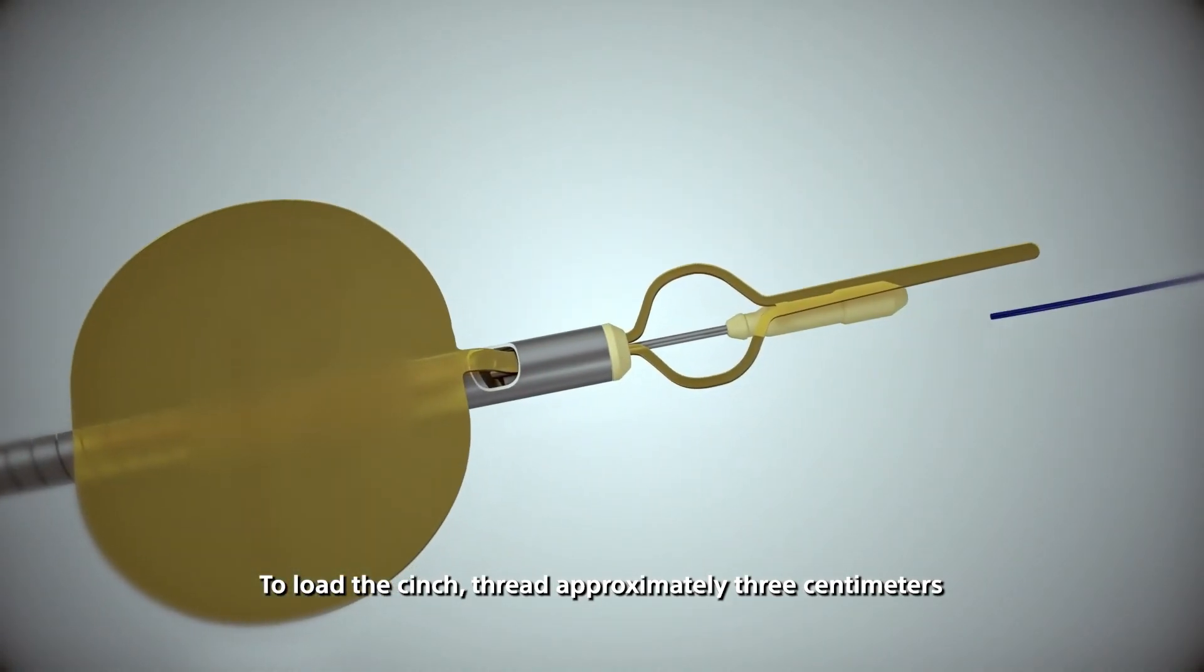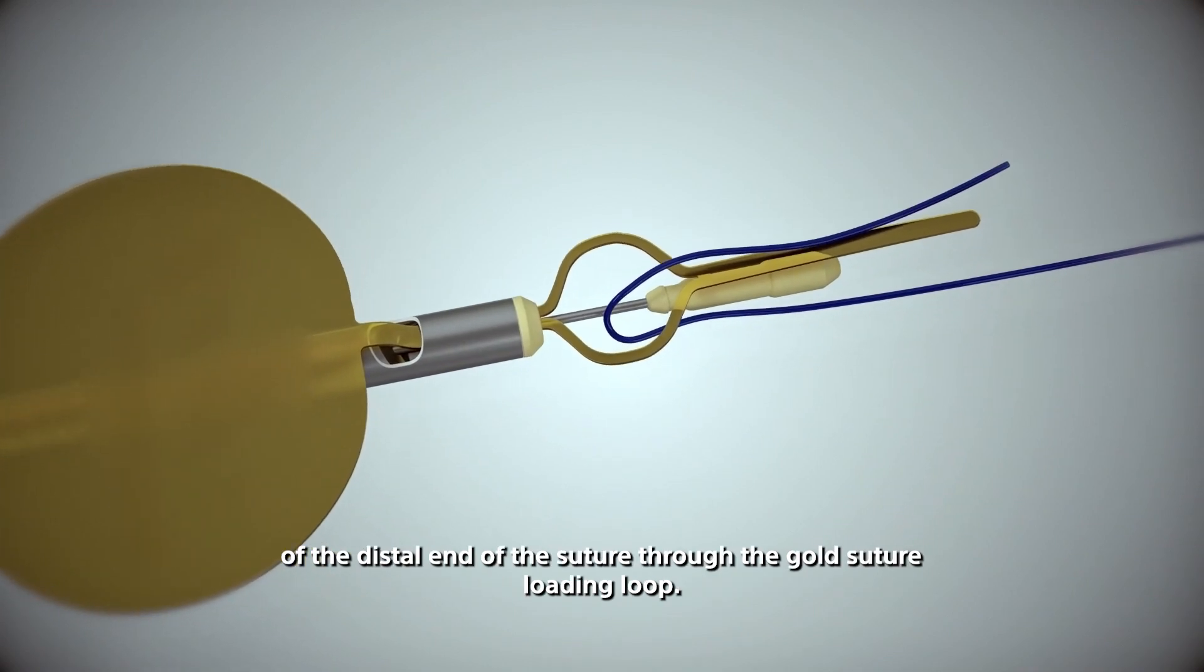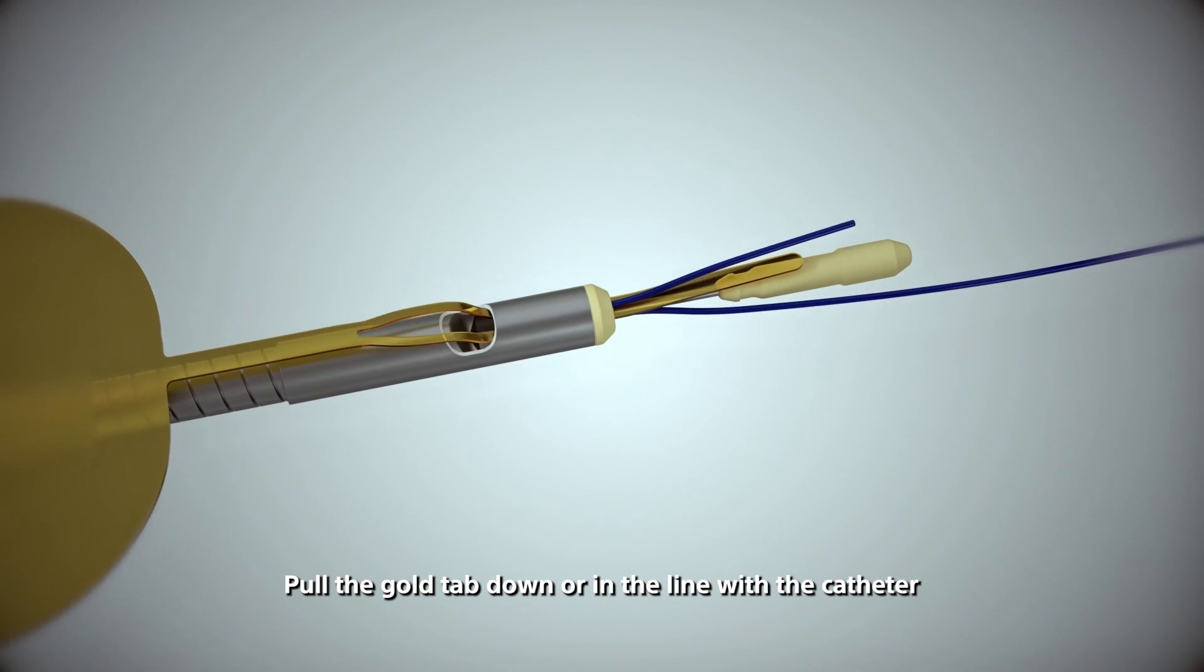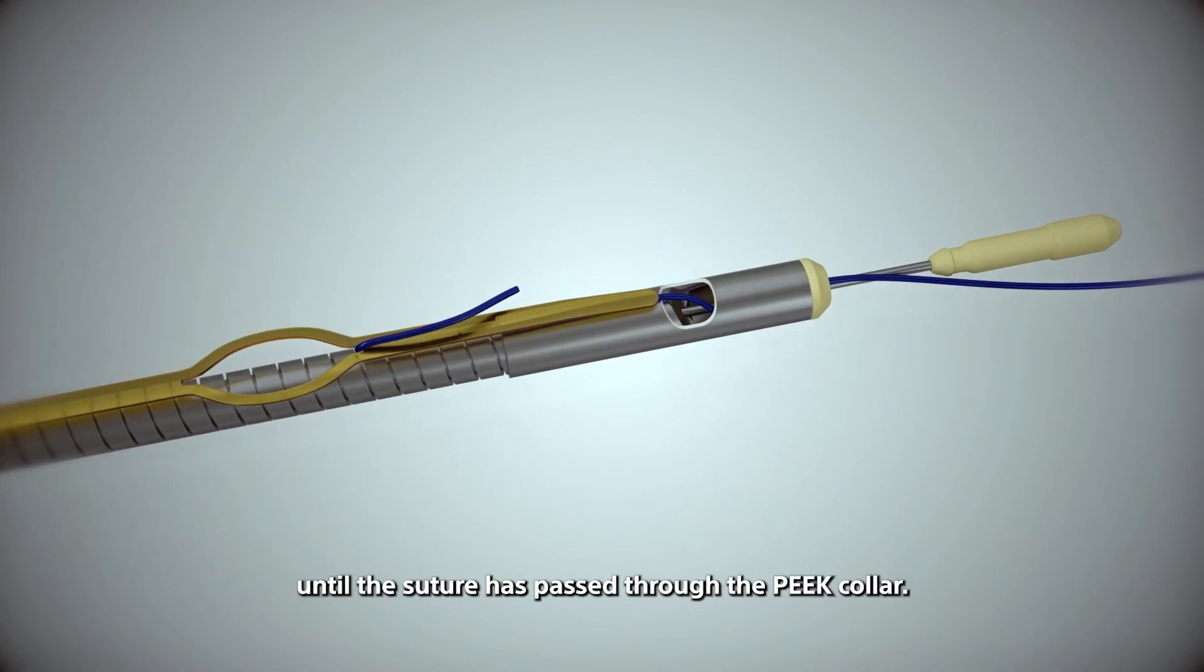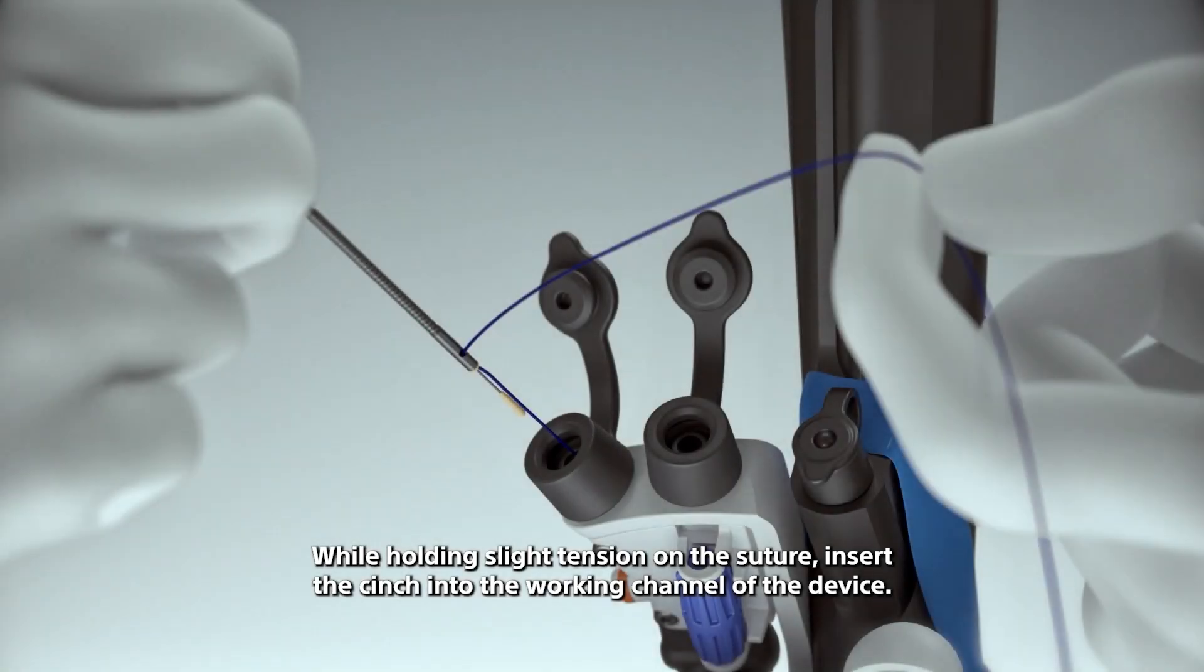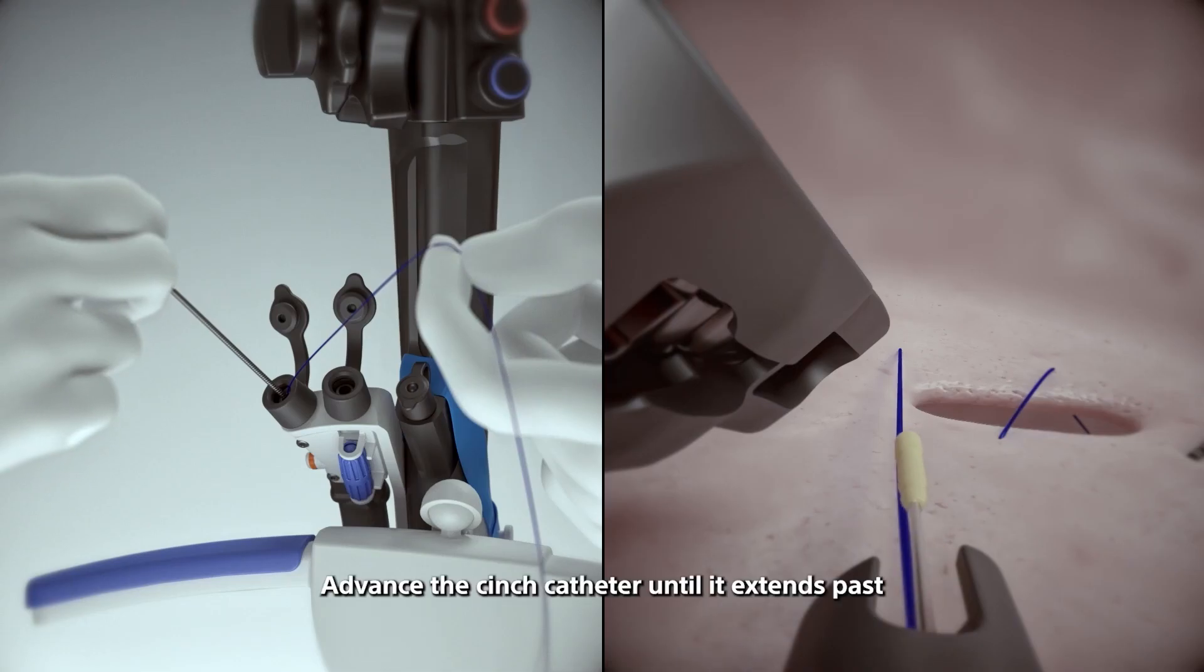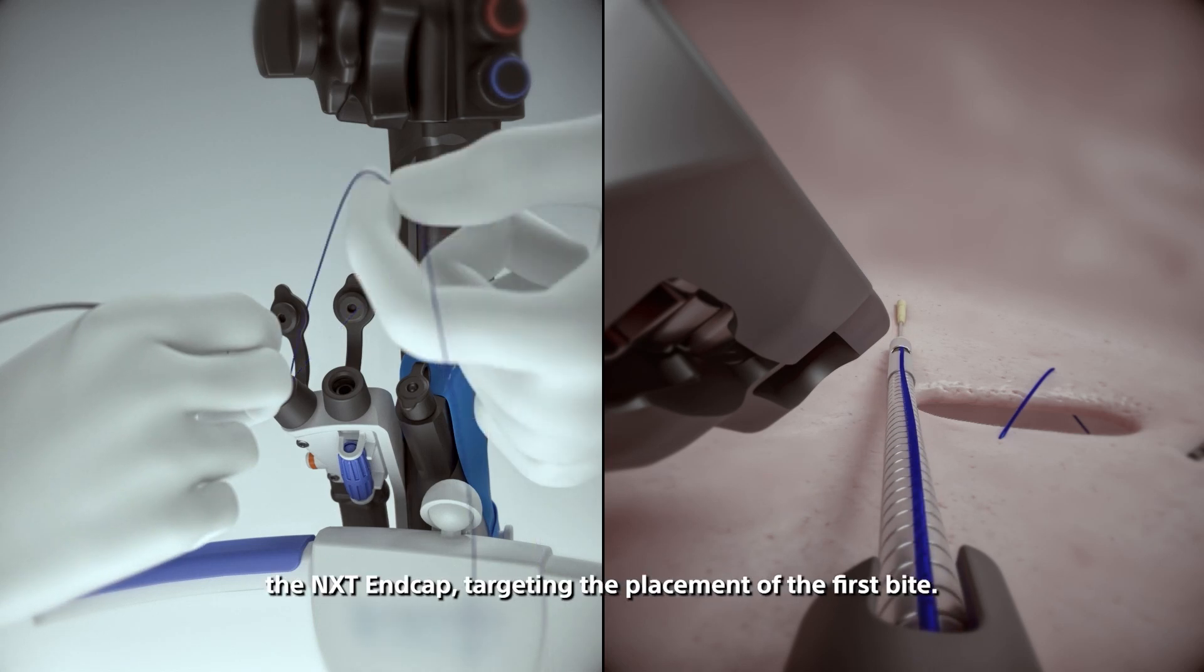To load the cinch, thread approximately three centimeters of the distal end of the suture through the gold suture loading loop. Pull the gold tab down or in line with the catheter until the suture has passed through the peak collar. While holding slight tension on the suture, insert the cinch into the working channel of the device. Advance the cinch catheter until it extends past the NXT end cap, targeting the placement of the first bite.